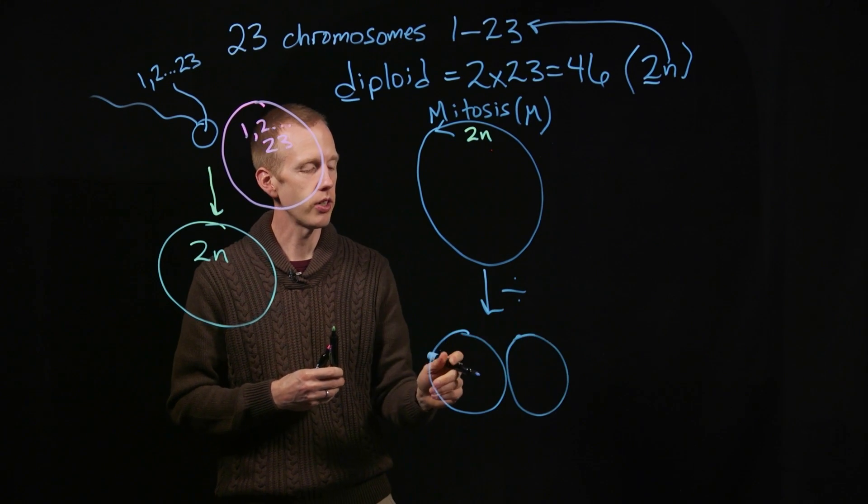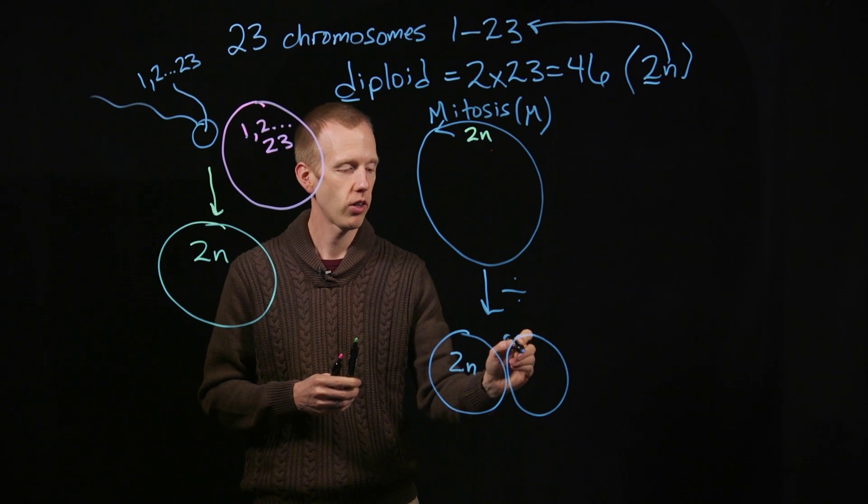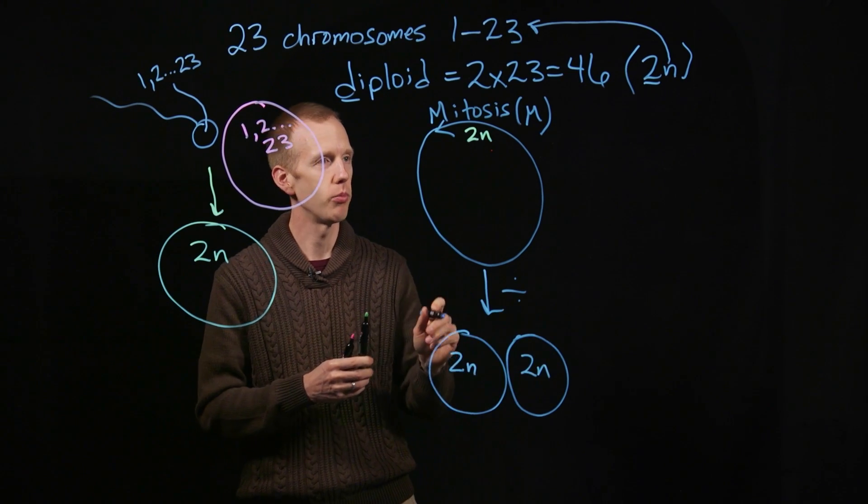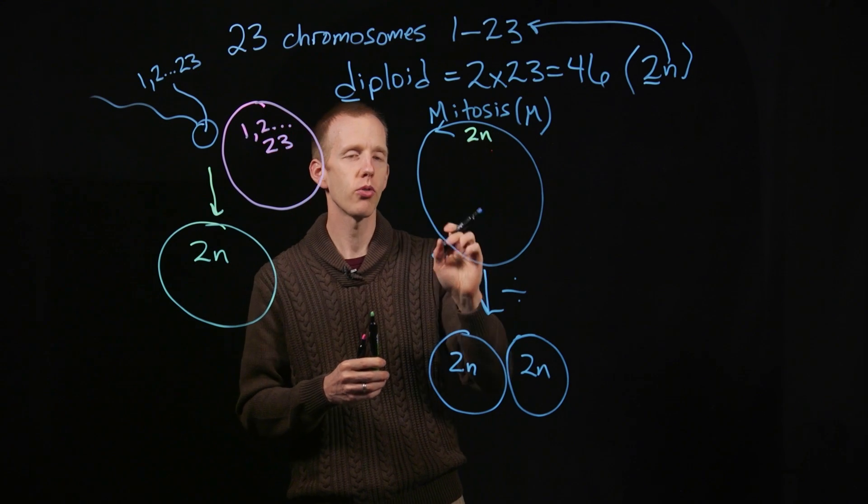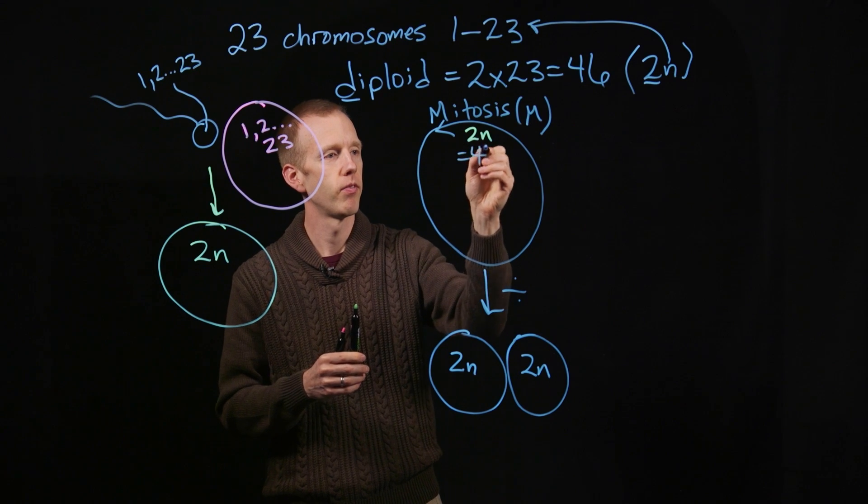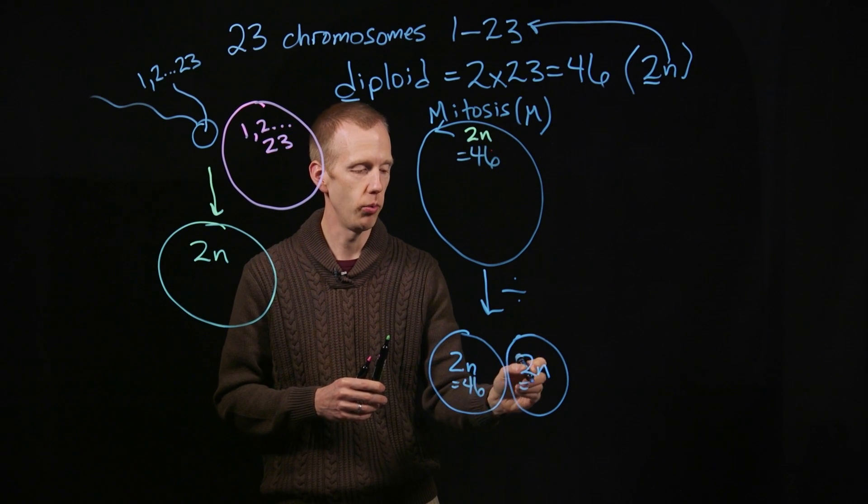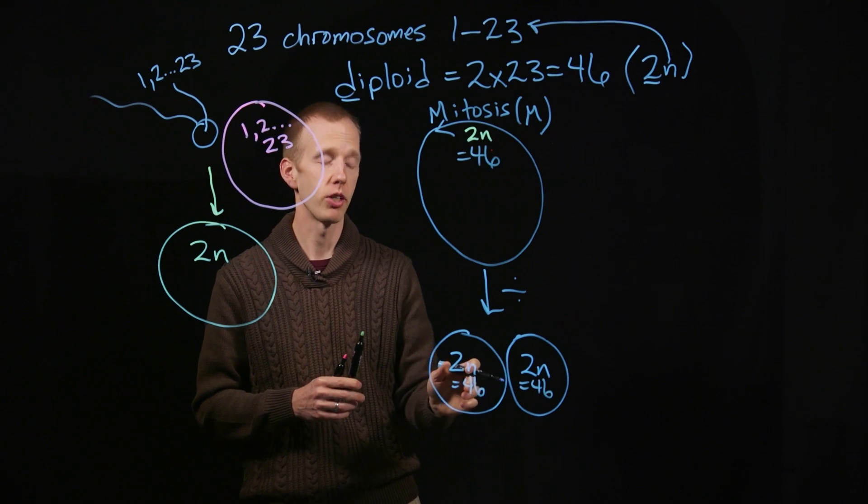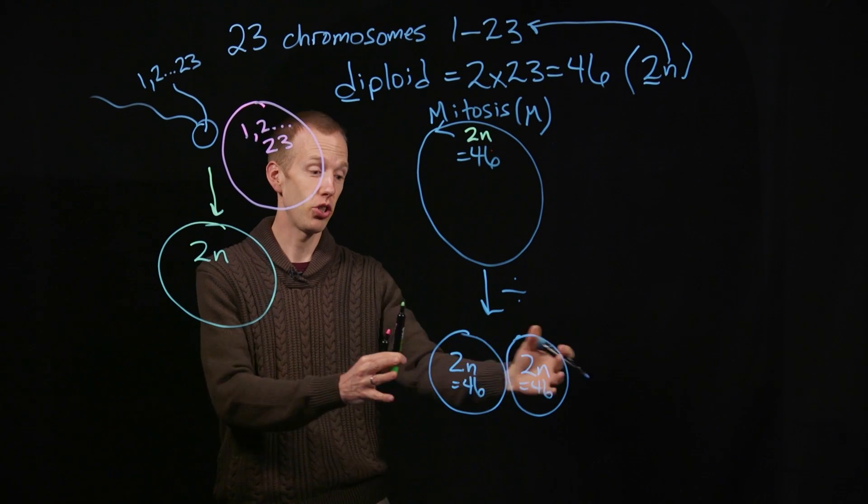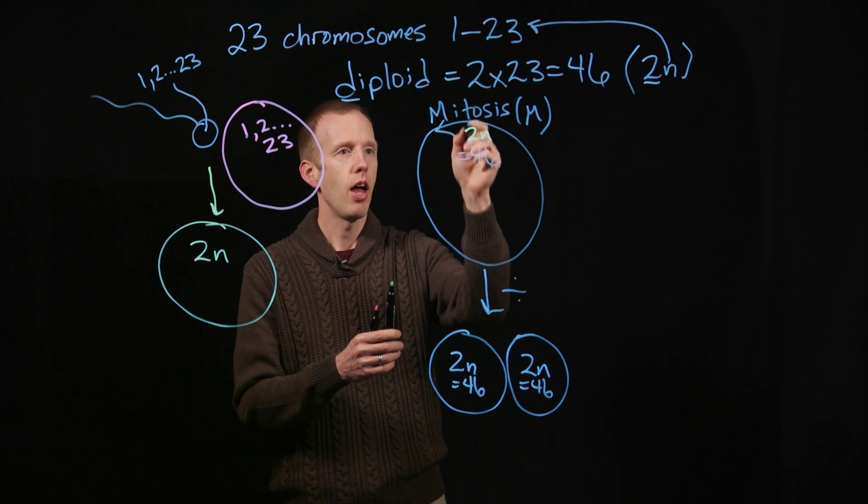each of those two resulting cells needs also to have 2n copies of the chromosomes. So if we have 46 chromosomes, 2 copies of 23 in this cell, then how are we going to get to twice that number of chromosomes? 46 plus 46, 92 copies total in this organism after the first cell division.